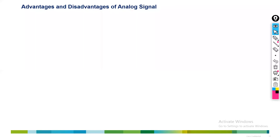Hello everyone, my name is Syed. Today we are going to discuss about advantages and disadvantages of analog signal. In the last class, we have already discussed what is analog signal, how many different types of analog signal we have — loop start, ground start — and also we have discussed about the signaling events. Today we are going to discuss about advantages, disadvantages, and also analog ports we have.